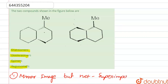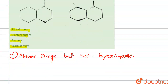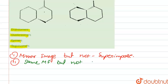Next are diastereomers. Diastereomers are not mirror images of each other. They have the same molecular formula but are non-mirror images of each other.